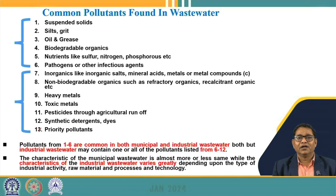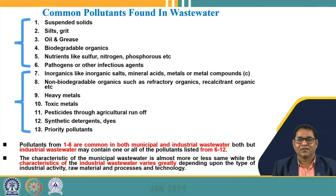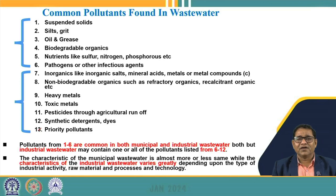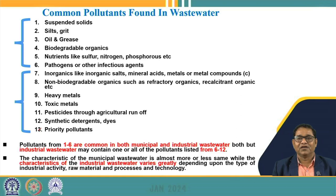Impurities listed from 7 to 13 — inorganics, salts, mineral acids, metals, metal compounds, non-biodegradable organics like priority pollutants, refractory organics, recalcitrant organics, various types of heavy metals, toxic metals, pesticides from agricultural runoff, synthetic detergents, and other priority pollutants — are mostly present in industrial wastewater. That is why the characteristic of industrial wastewater varies from industry to industry and depends upon industrial activities, raw material processes, and the technology adopted.